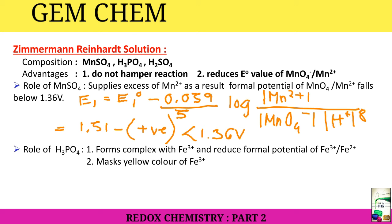Now we will see the role of H3PO4. First of all, it forms complex with Fe³⁺ and reduces the formal potential of Fe³⁺/Fe²⁺. Secondly, it masks the yellow color of Fe³⁺. This was the previous equation where Fe²⁺ was forming. After complex formation, it will look like this: Fe(HPO4)₂³⁺ + e⁻ gives us Fe(HPO4)₂²⁺.